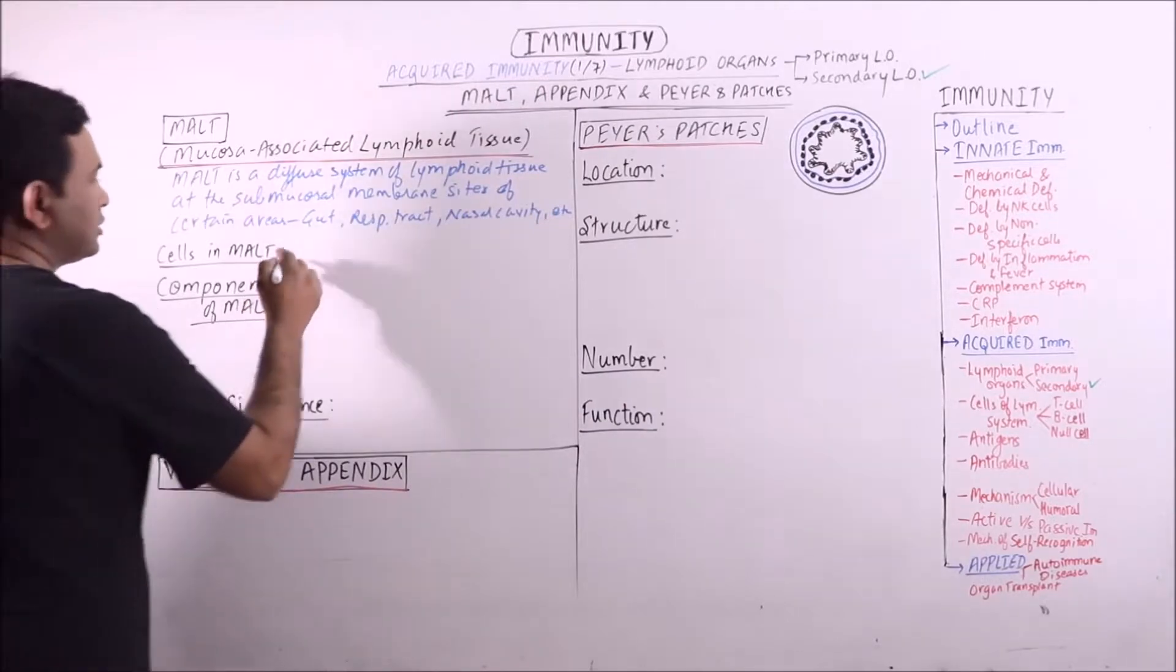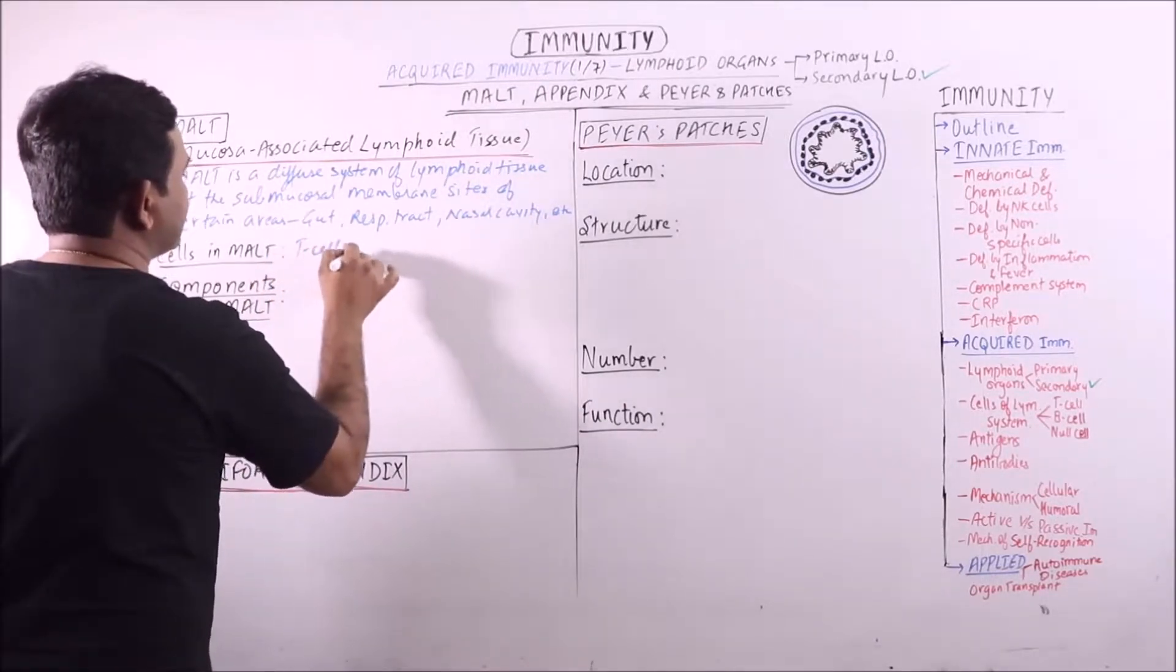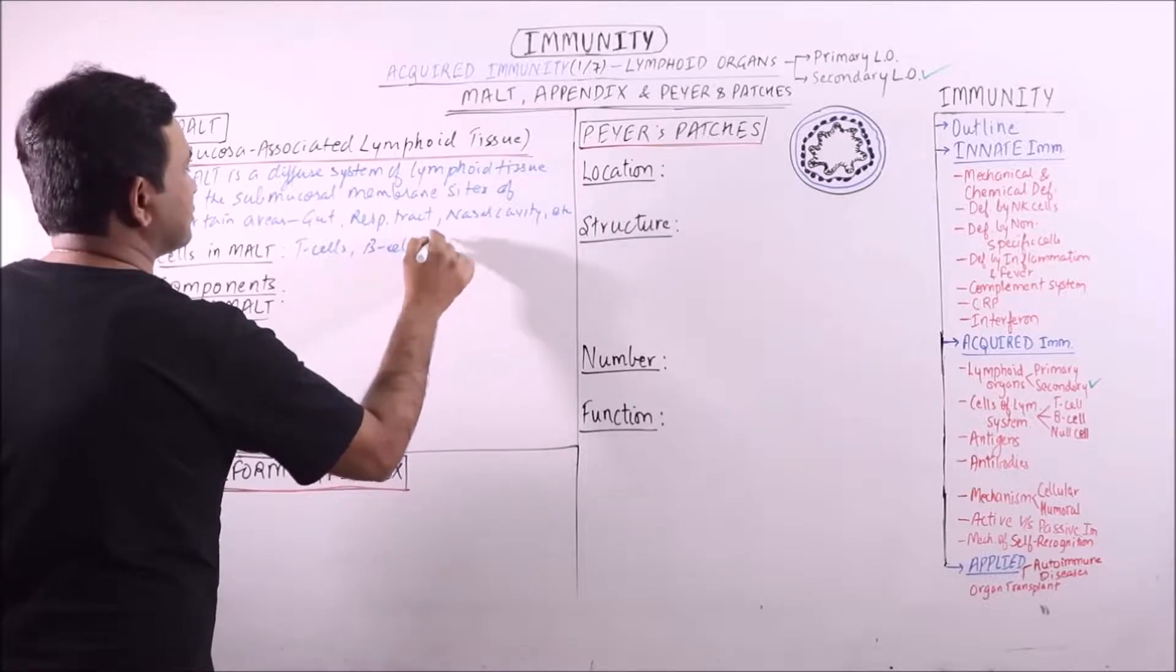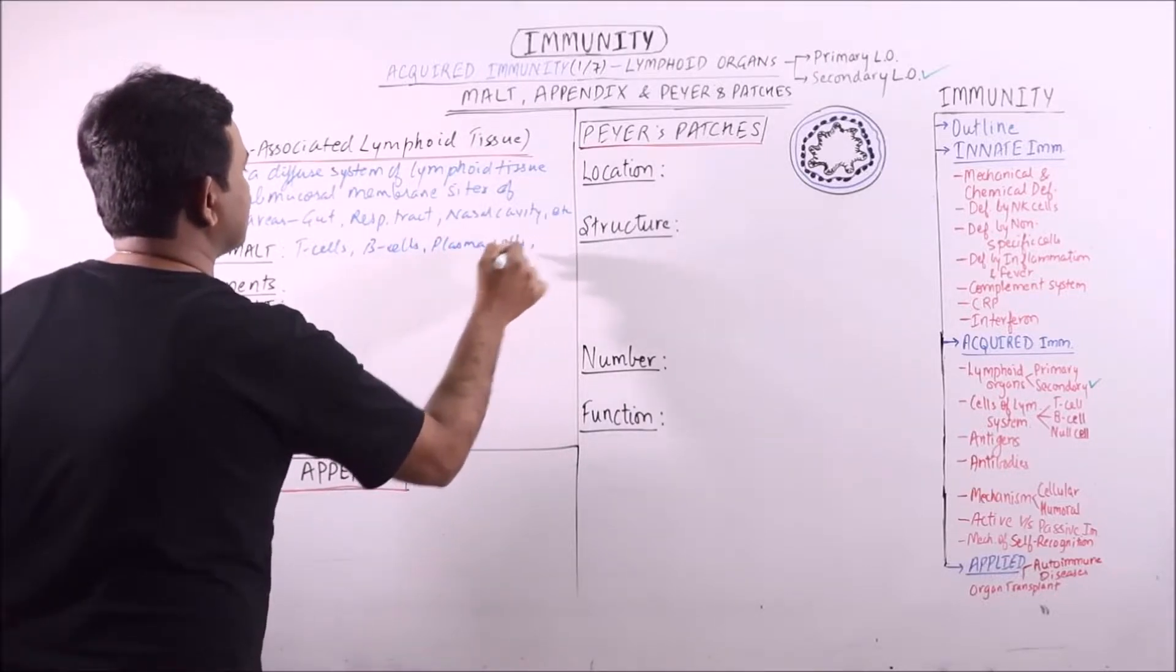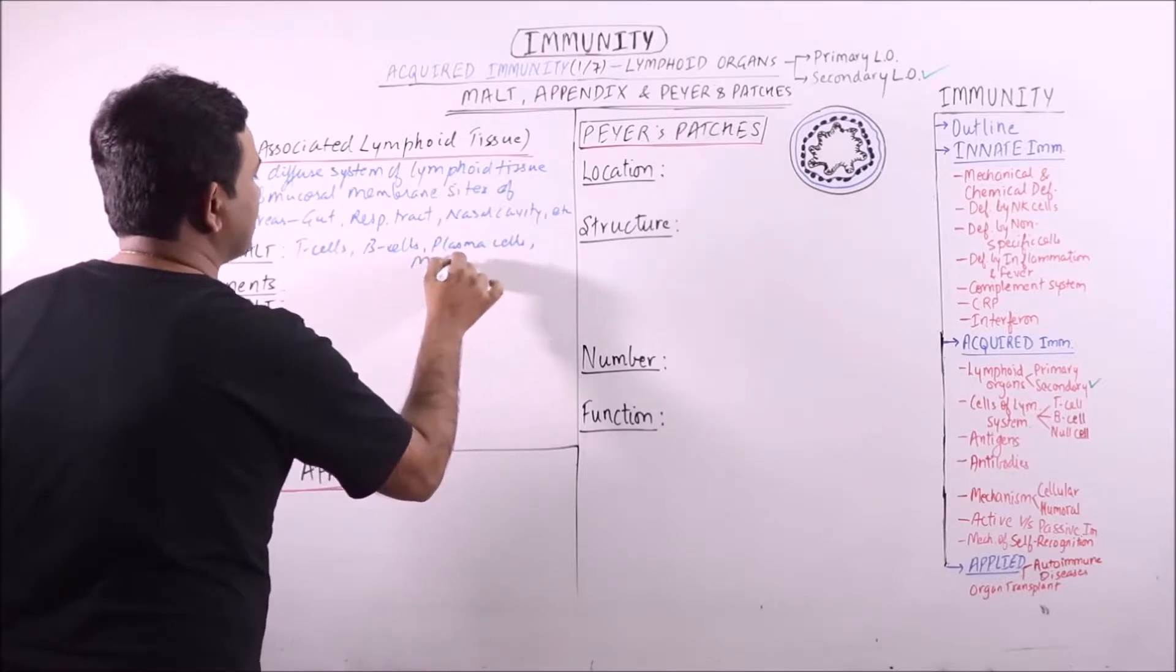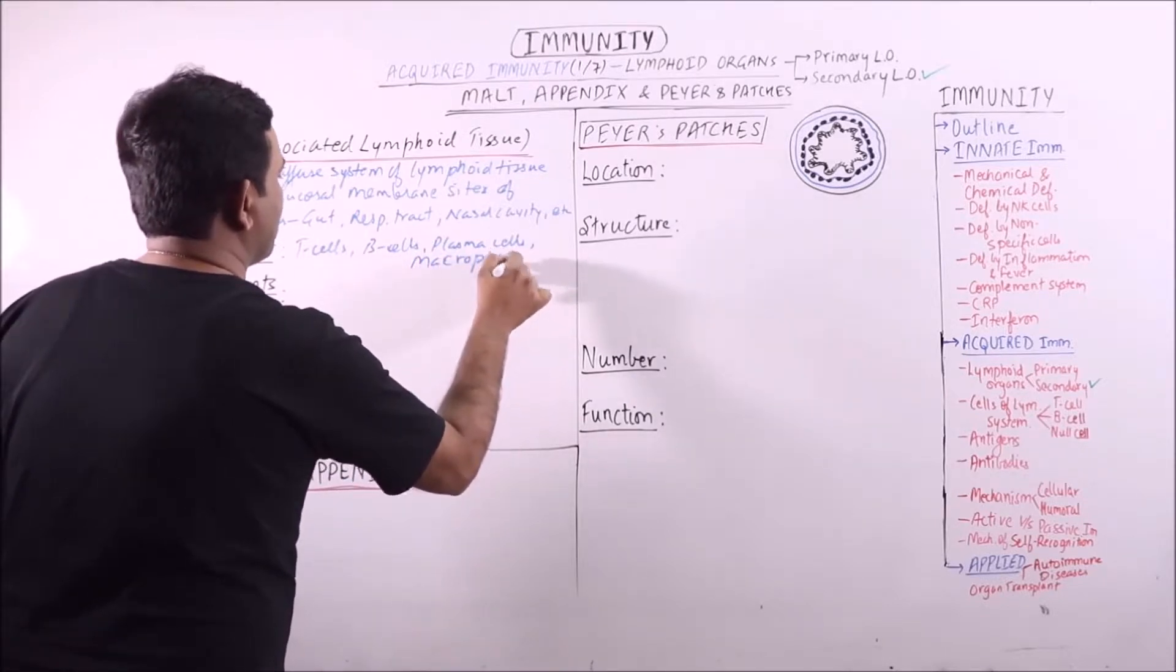Now the cells in MALT are T cells, B cells, plasma cells, and the macrophages.